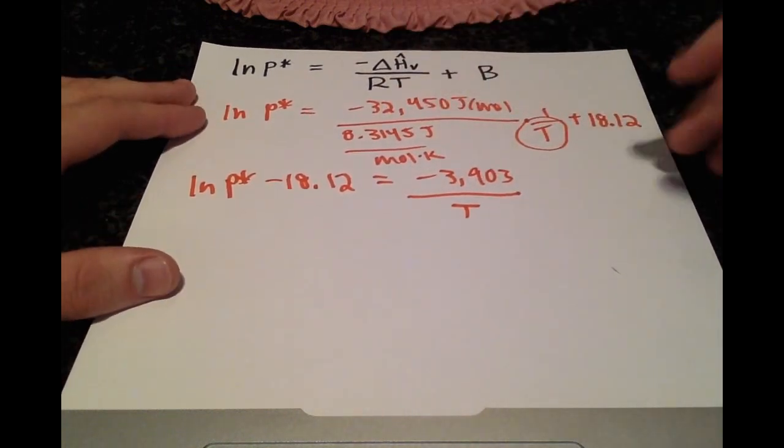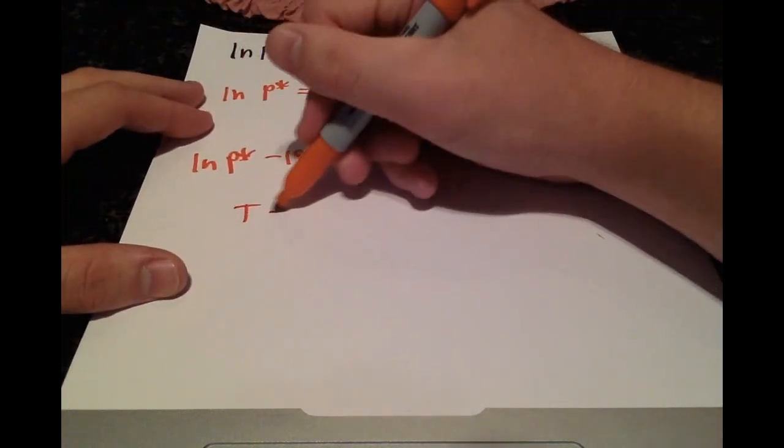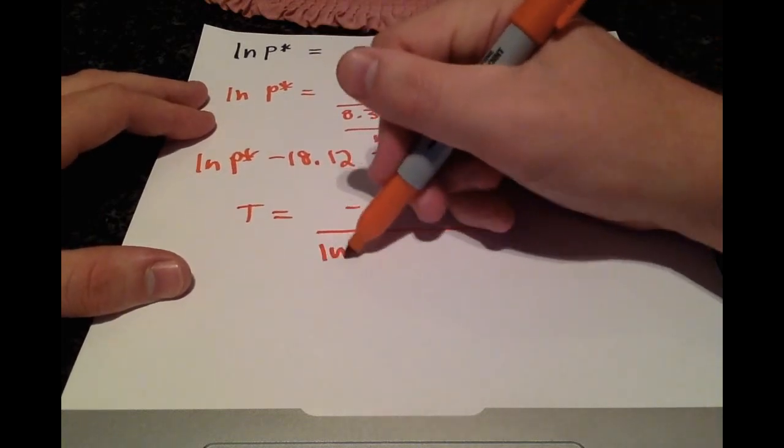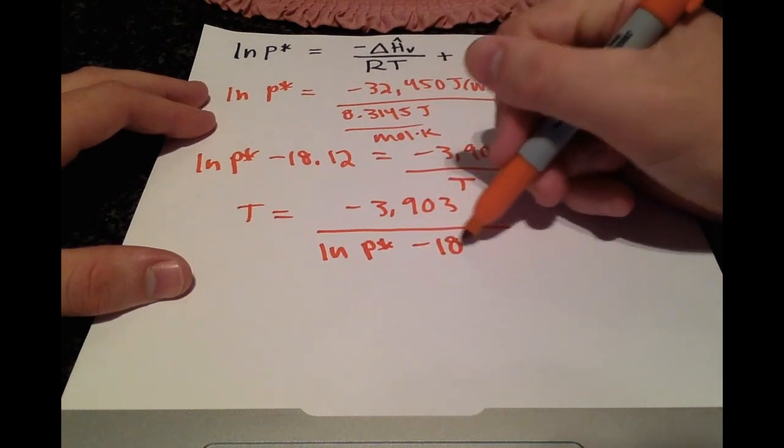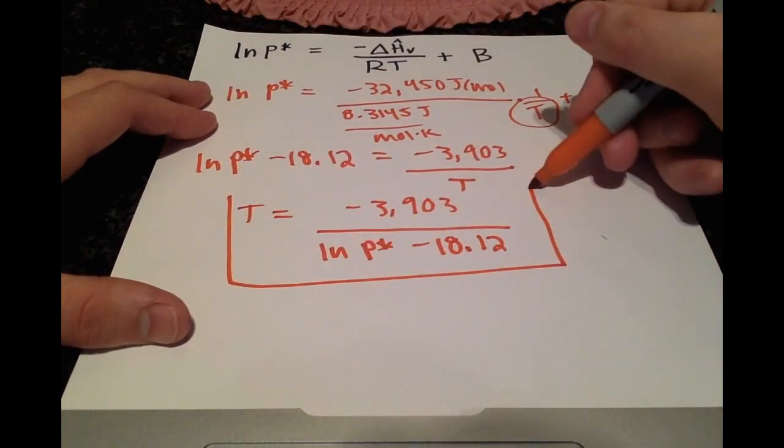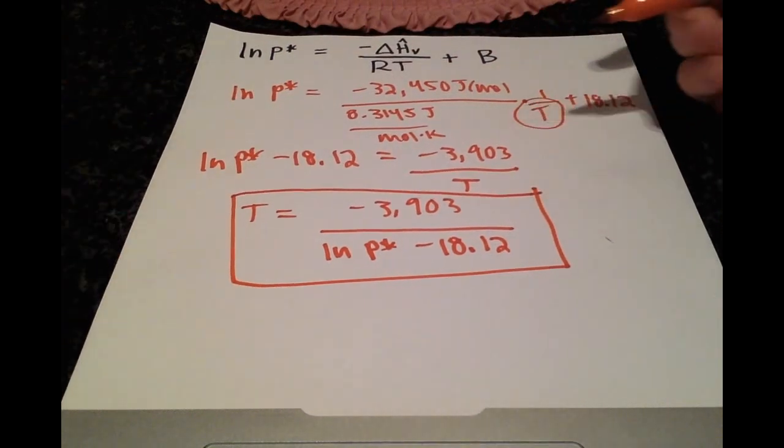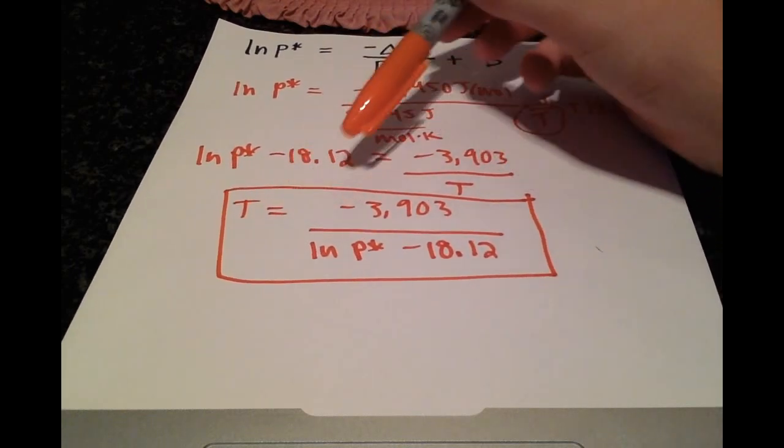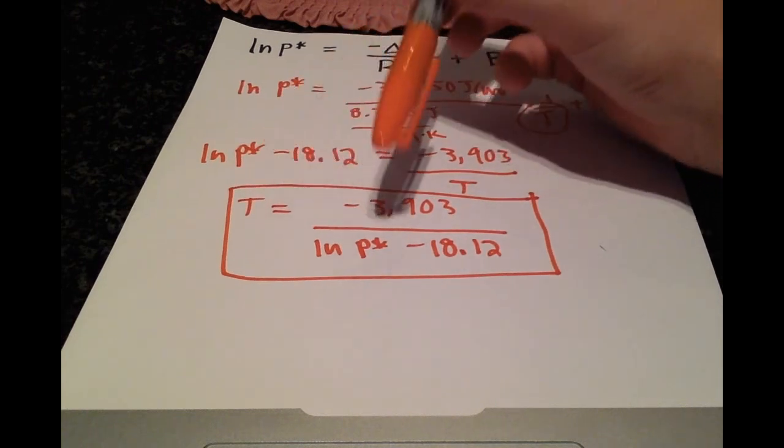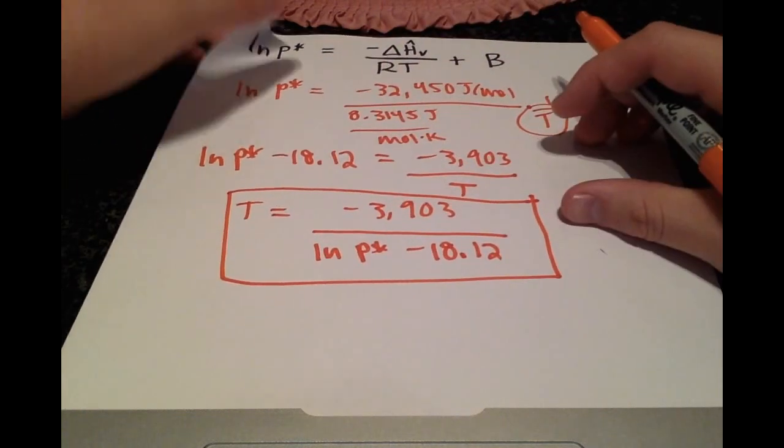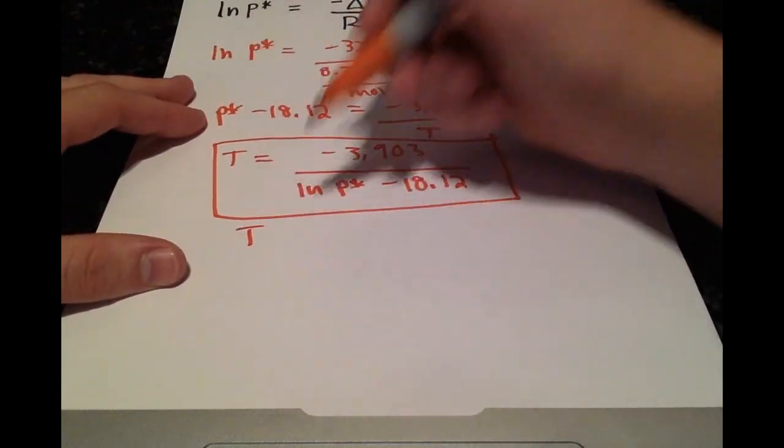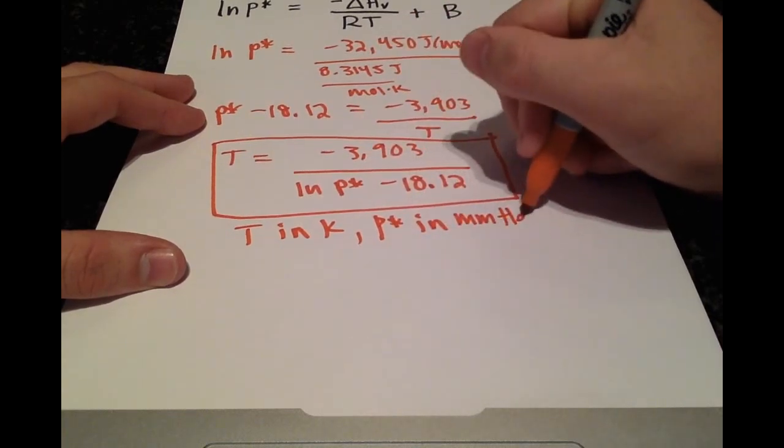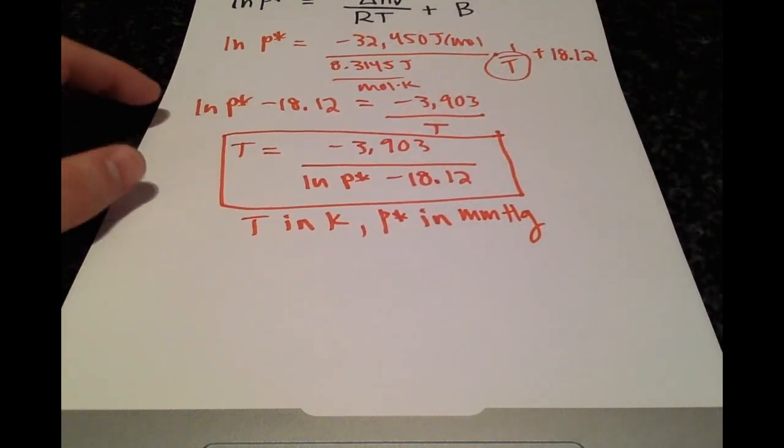We can do some cross multiplication here to get our final answer. Even though we were given a value for T and the vapor pressure, we're not plugging those in yet because we want the general formula—an equation where I can put in a vapor pressure and get a temperature. Another thing to clarify: temperature is in Kelvin and vapor pressure is in millimeters of mercury, because you need the right units to get the right answer.